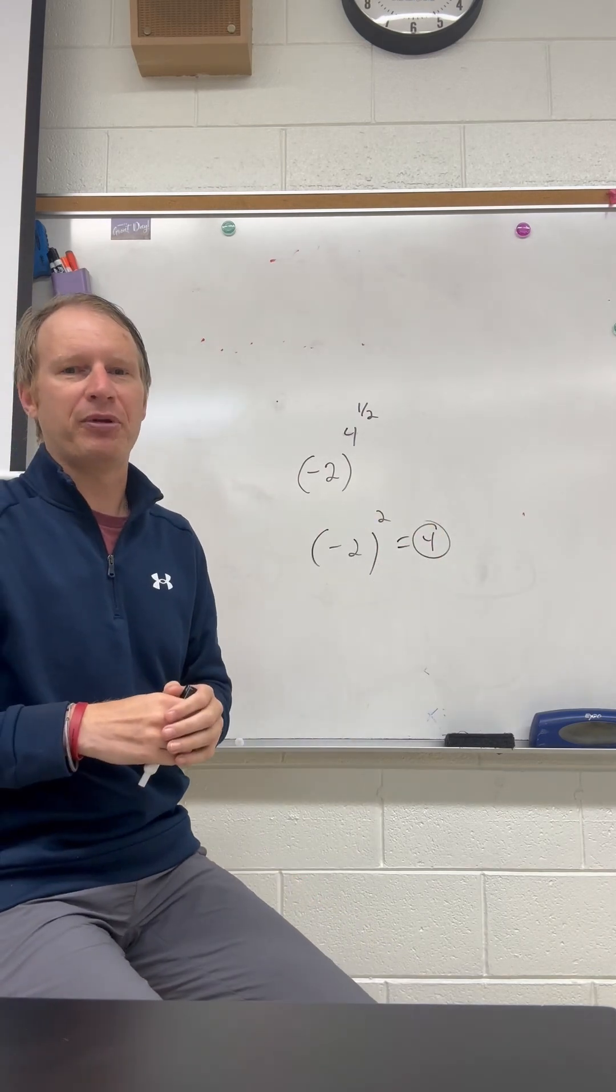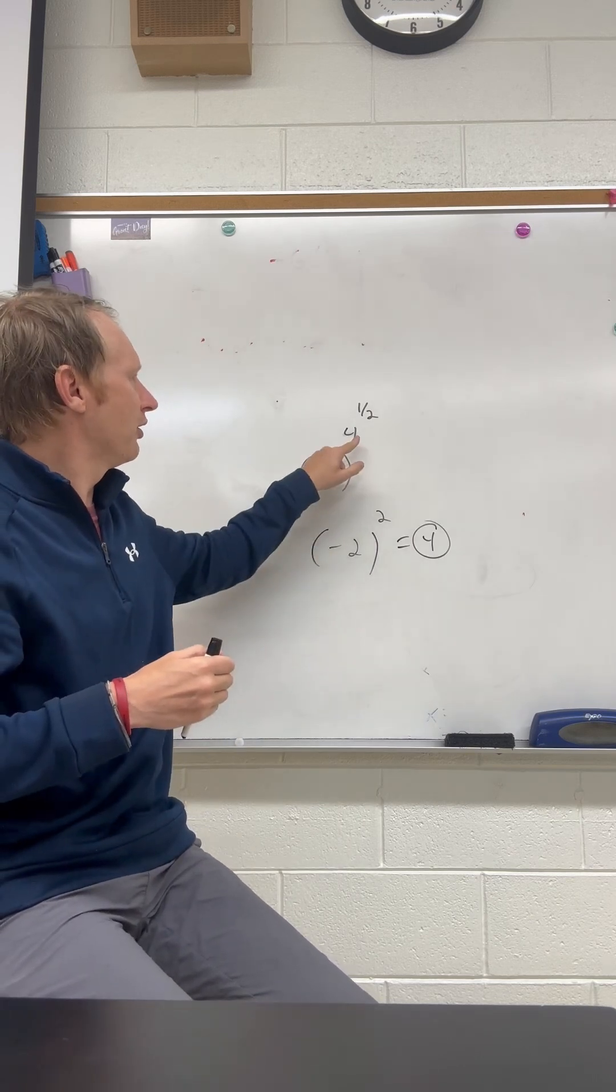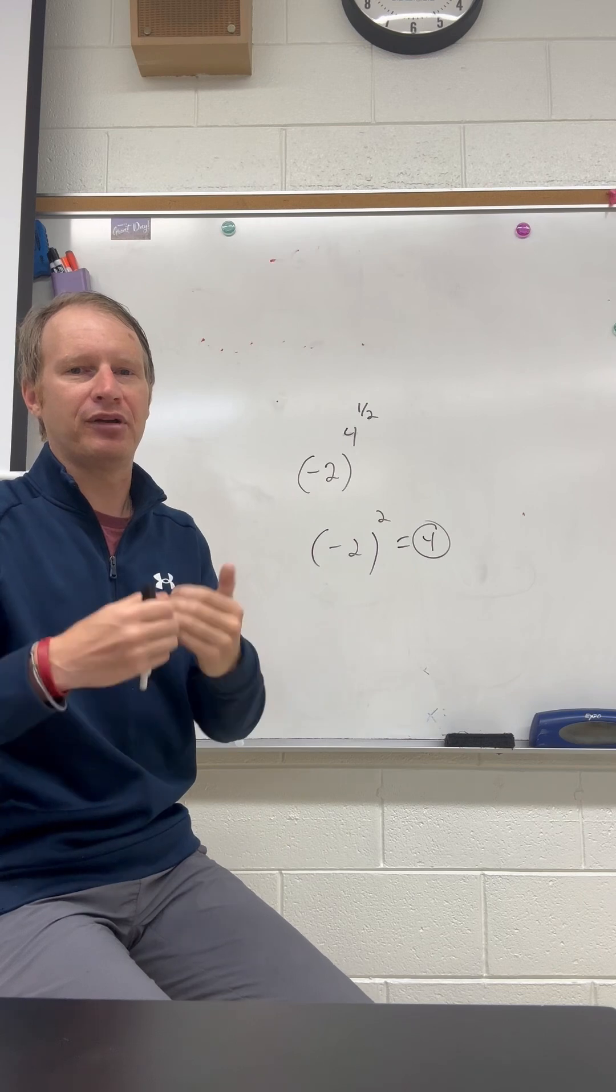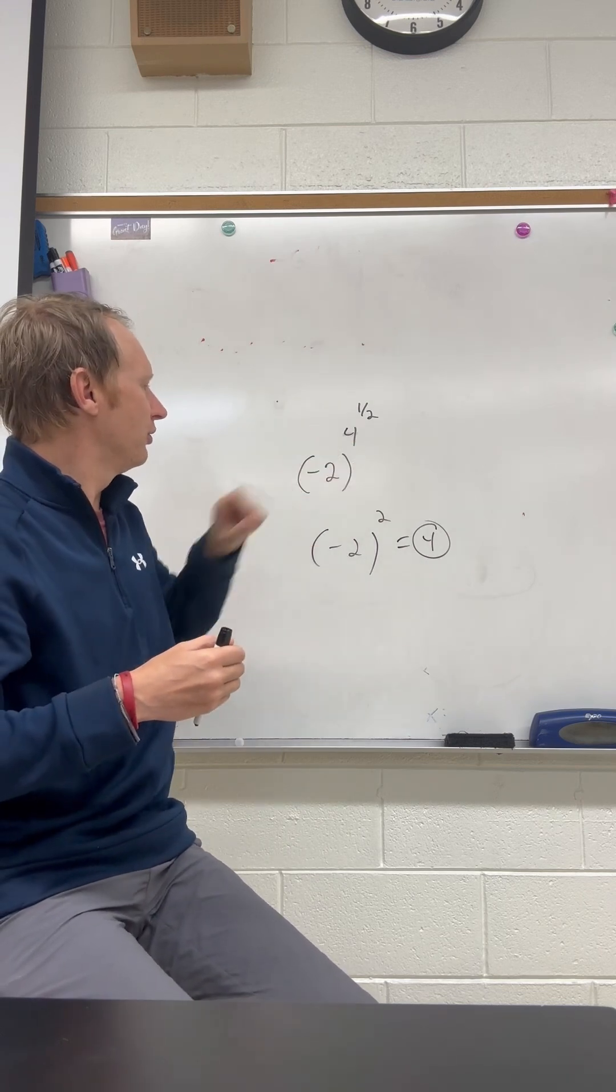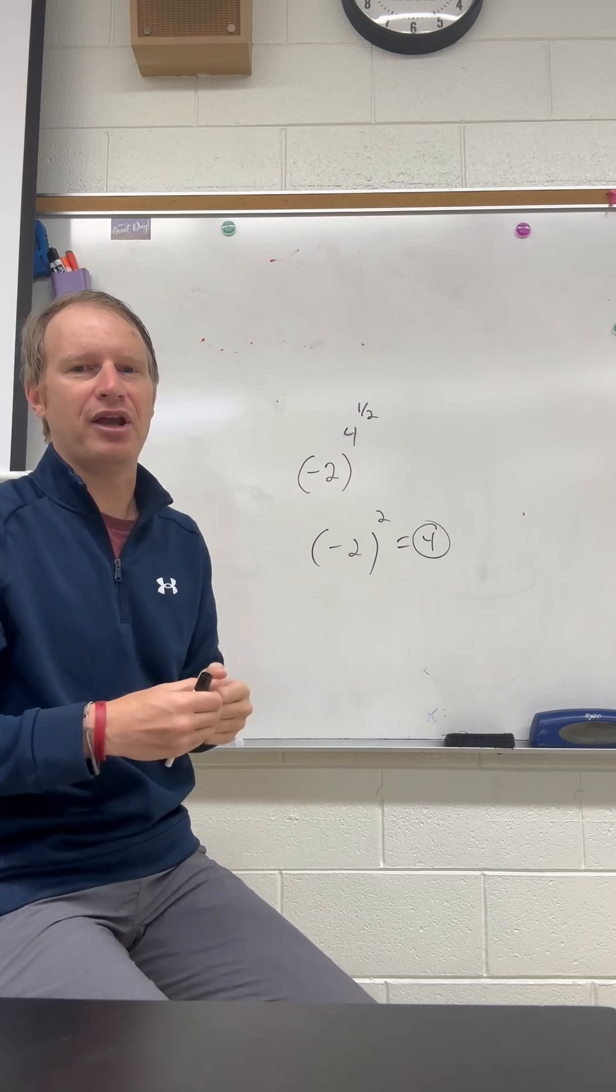This problem was actually probably a little easier than what it looked like initially. One of the key things to solving this one was you had to know that 4 to the 1/2 power was the same thing as the square root of 4, which is 2. And then you had to know that negative 2 squared was the same thing as negative 2 times negative 2, which is 4.